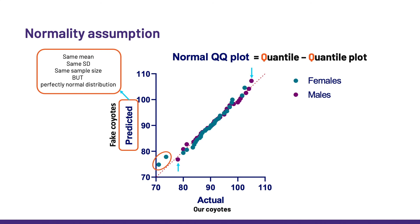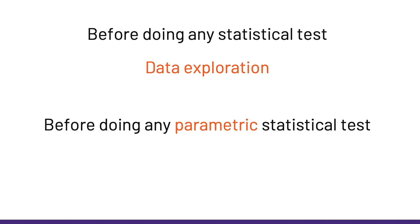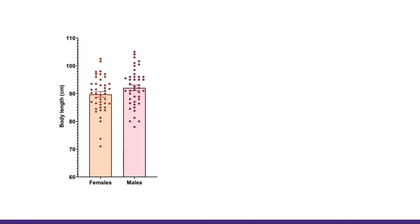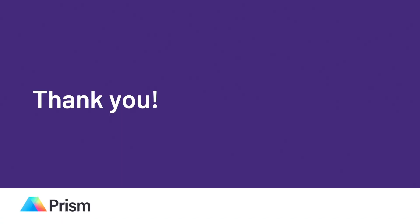As for the second assumption, apart from the graphical approach, there are also statistical tests that can identify significant differences between group variances. They are run by default in Prism when we run a parametric test, so we will talk about it then. So, one last time — before doing any stats, we need to explore our data, and before doing any parametric statistical test, we need to explore our data to check that the assumptions of such tests are met. As for our coyotes, we did a good job with data exploration, so we can be pretty confident that a parametric approach is okay here — namely a Student's t-test, which we will do together in another video. Thank you for listening, and don't forget: stats don't have to be scary!